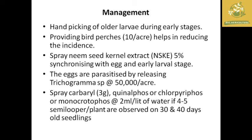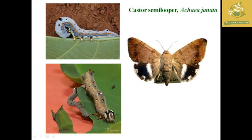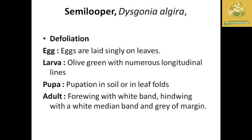Trichogramma species at 50,000 per acre can be used for biocontrol. Chemical spraying can also be used to control the castor semi-loopers. Apply chemical sprays at 4–5 days interval for 30–40 days as needed. These are the management strategies for castor semi-loopers.